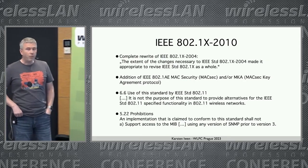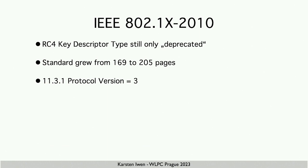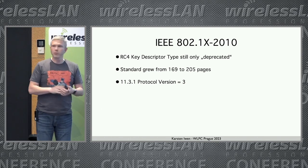2010 was a major change — everything was done new. The biggest change was the addition of MACsec and the MACsec security agreement. In wireless, we had link encryption since forever, but for wired communication it started in 2006 when 802.1AE MACsec was standardized, and this was incorporated into the .1X standard. It also states it's not meant to replace the way we do encryption in wireless networks, so we have one technology for wired and one for wireless LANs. The RC4 key descriptor type is still deprecated, and the protocol version is incremented to three.